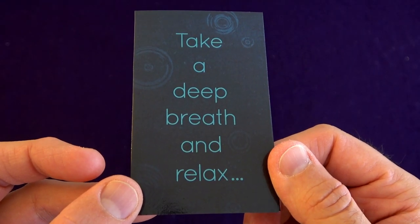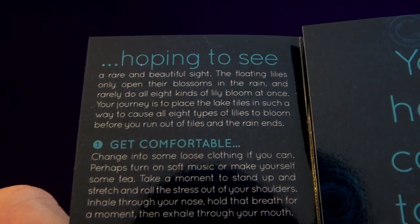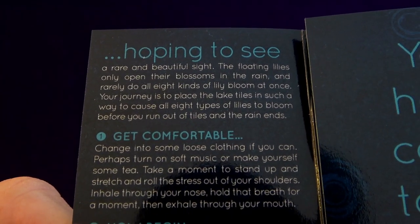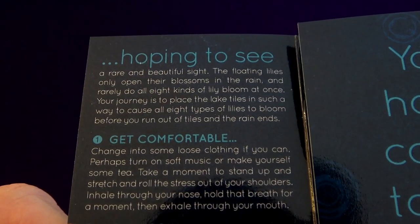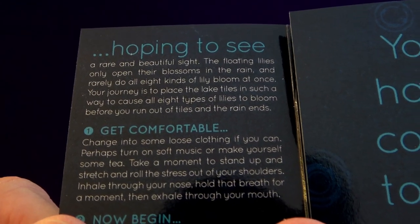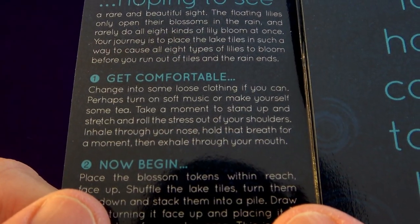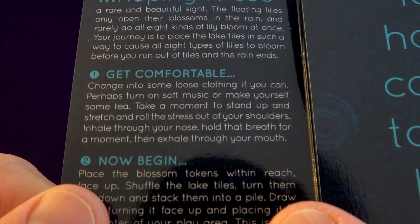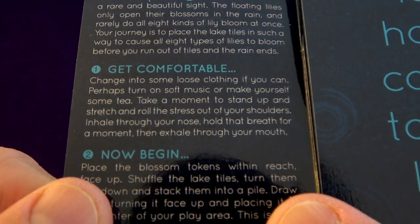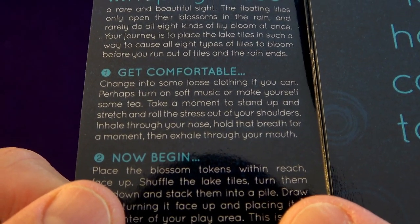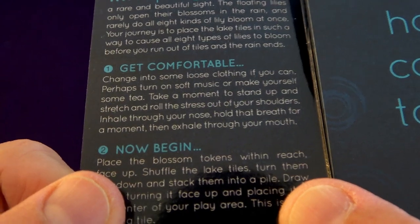Take a deep breath and relax. You have come to the lake, hoping to see a rare and beautiful sight. The floating lilies only open their blossoms in the rain and rarely do all eight kinds of lily bloom at once. Your journey is to place the lake tiles in such a way to cause all eight types of lilies to bloom before you run out of tiles and the rain ends. Get comfortable. Change into some loose clothing if you can. Perhaps turn on soft music or make yourself some tea. Take a moment to stand up and stretch and roll the stress out of your shoulders. Inhale through your nose, hold that breath for a moment, then exhale through your mouth. Now begin.